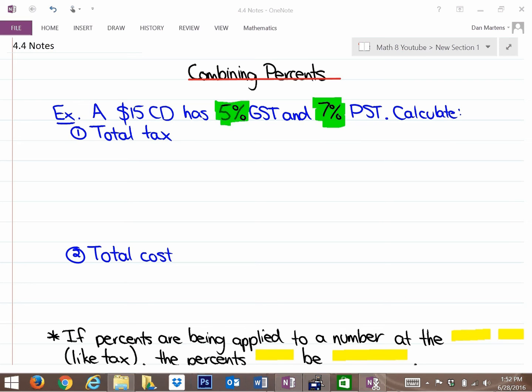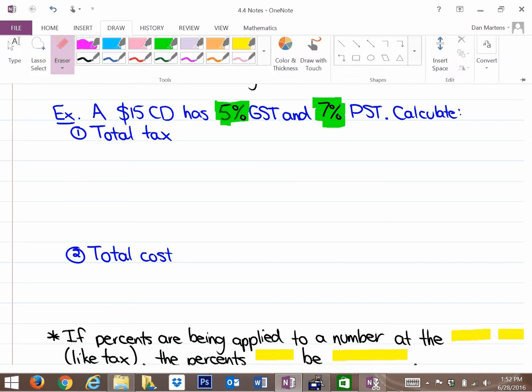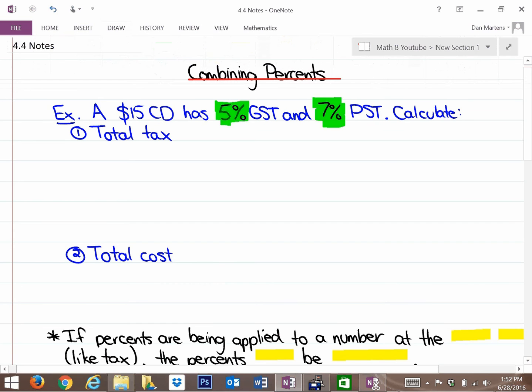This first problem says a $15 CD has 5% GST and 7% PST. Calculate the total tax and the total cost. So first of all, to calculate the total tax, we are allowed to, in this scenario, combine the 5% and 7% tax, and that equals 12% tax.